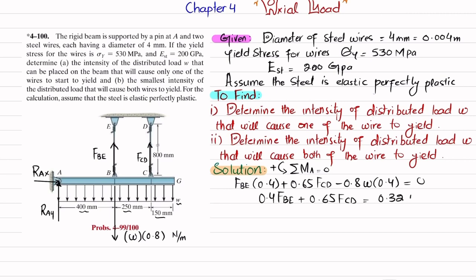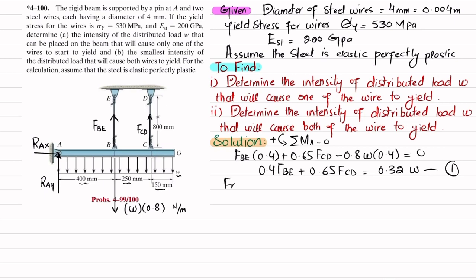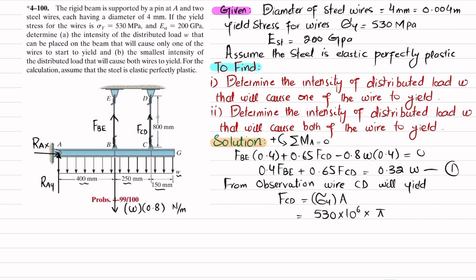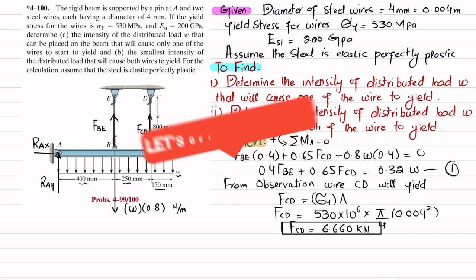From observation, wire CD will yield first. The force in CD at yielding equals yield stress times area: FCD = 530×10⁶ × (π/4) × (0.004)² = 6.660 kN.